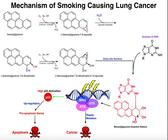This binding to benzopyrene greatly disrupts the DNA strand, and so it's going to be perceived by the cell as DNA damage, and you're going to get a DNA damage response. A bunch of proteins such as MRN, ATR, and ATM are going to be recruited to the site of the DNA damage, and the cell is going to attempt to repair it.